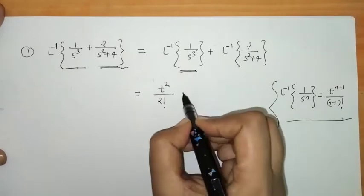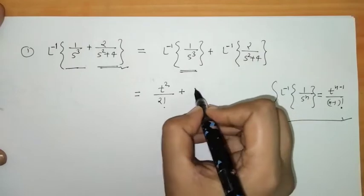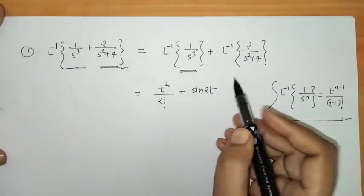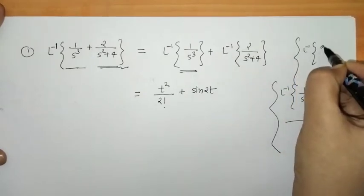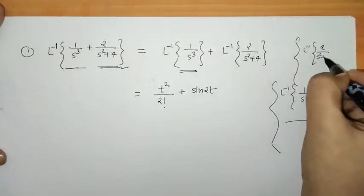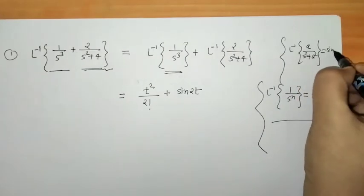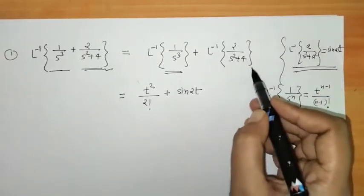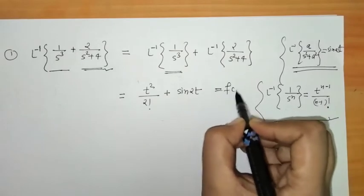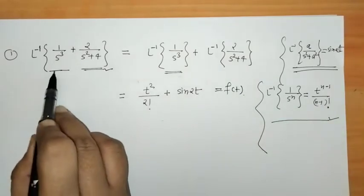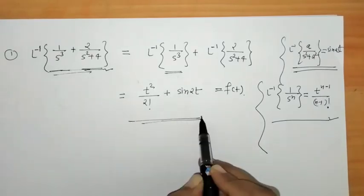For the second term, L⁻¹{2/(s²+4)}: this is of the form L⁻¹{a/(s²+a²)} = sin(at). So L⁻¹{2/(s²+4)} = sin(2t). Therefore the final answer for the first example is t²/2 + sin(2t).